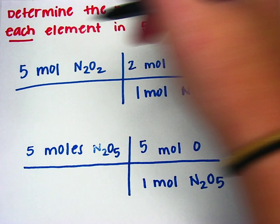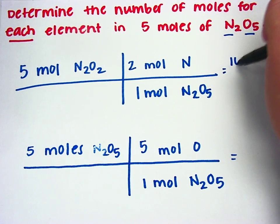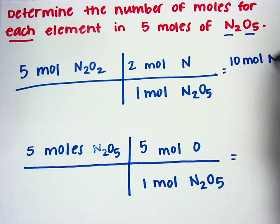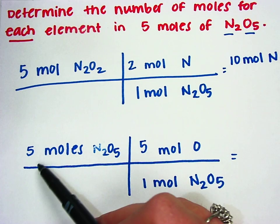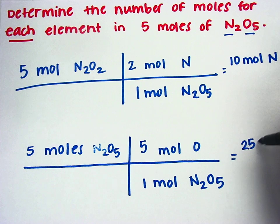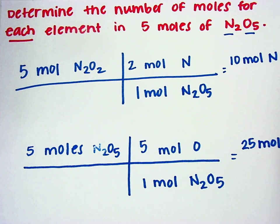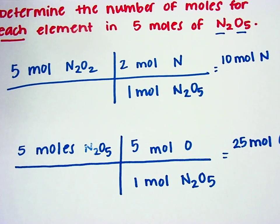So up here, 5 times 2 gives me 10 moles of nitrogen. And then on the bottom, 5 times 5 gives me 25 moles of oxygen. And that's it. That's a molar ratio problem.